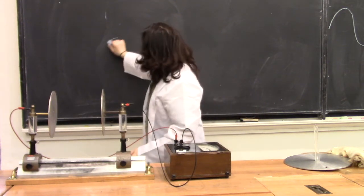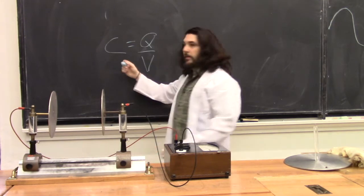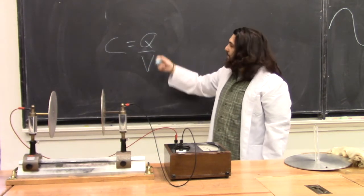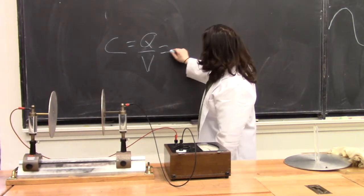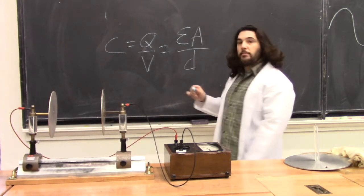A capacitor is defined by C equals Q over V. Capacitance equals the charge that the capacitor holds divided by the voltage across the capacitor. And you can derive that's equal to epsilon times the area of the capacitor over the distance between the plates.